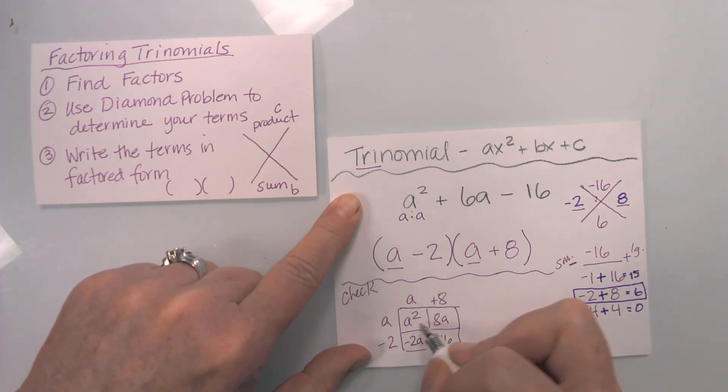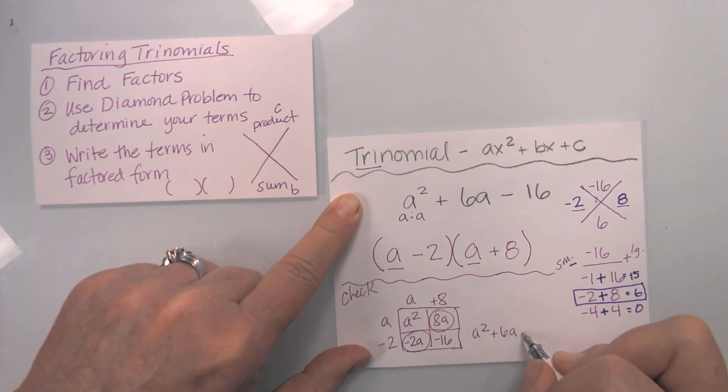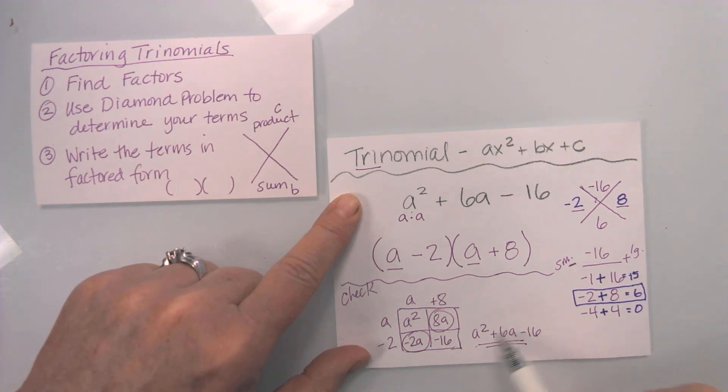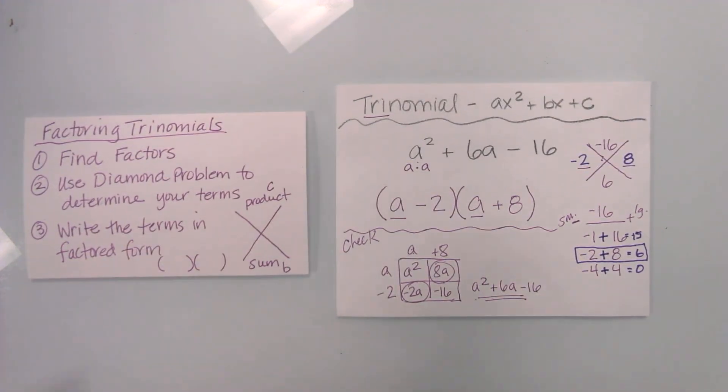When I put these together, I get a squared. Negative two a and a positive eight a is a positive six a. And then I'm left over with my negative 16. And notice that my checked is the same as my original. And that is how you factor trinomials.